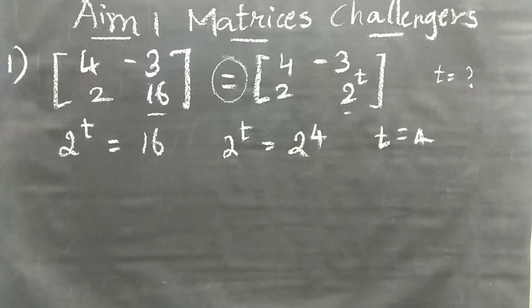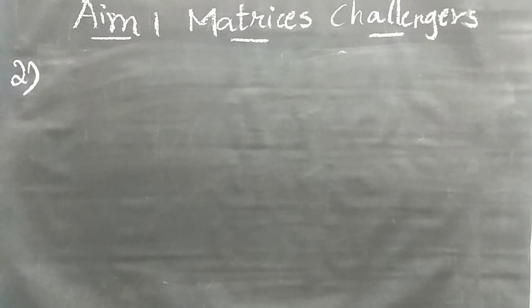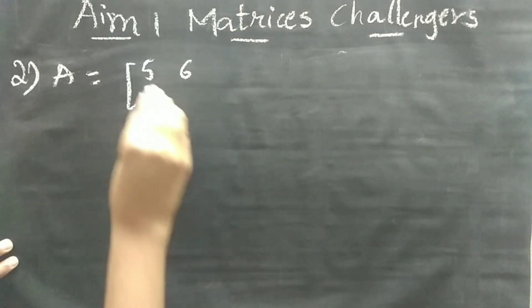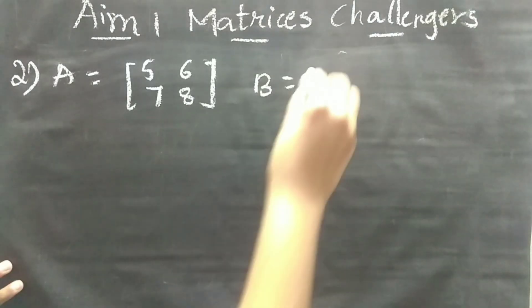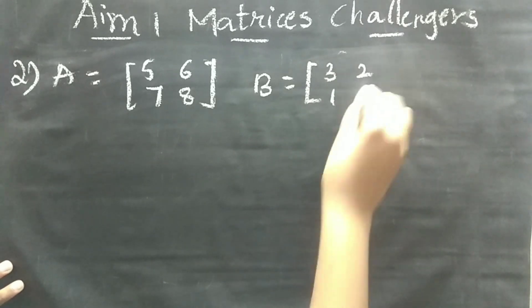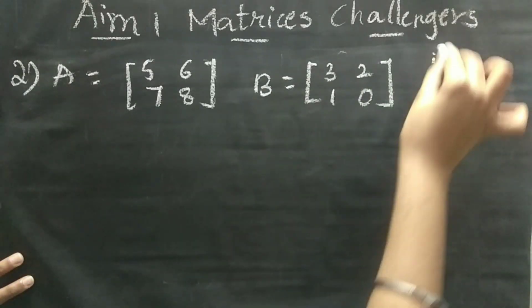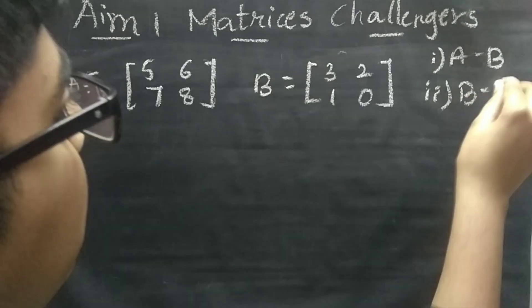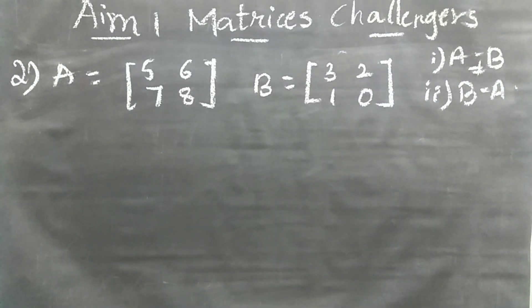Now we will see the second question. Two matrices are given: A = [5, 6; 7, 8] and B = [3, 2; 1, 0]. We have to find first A minus B, second B minus A, and also show that A minus B is not equal to B minus A.